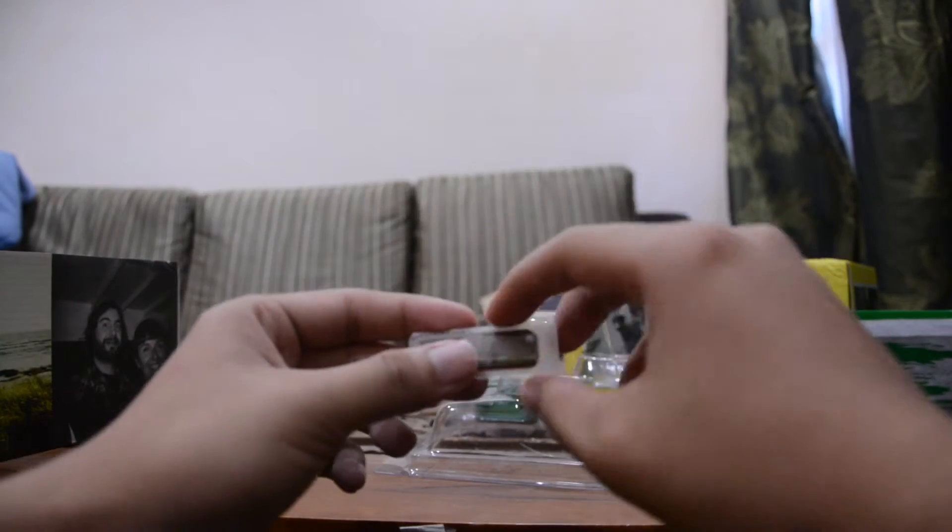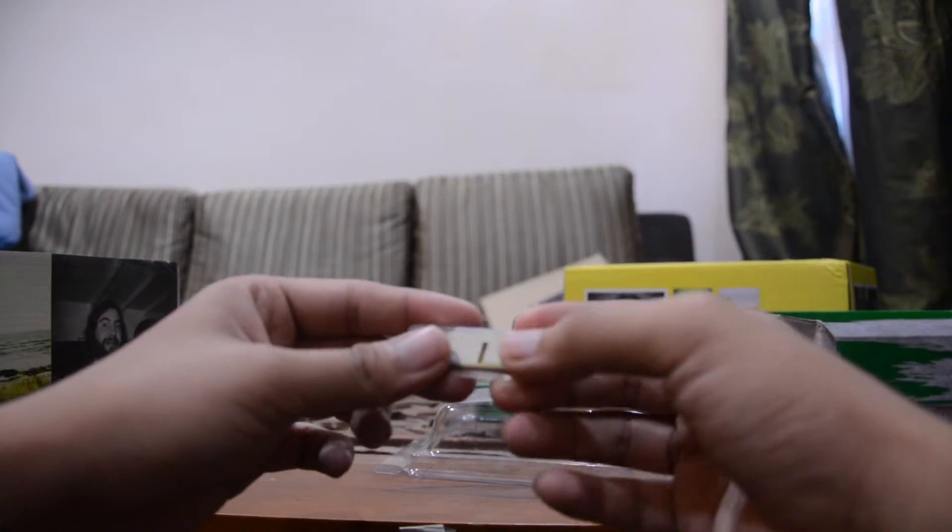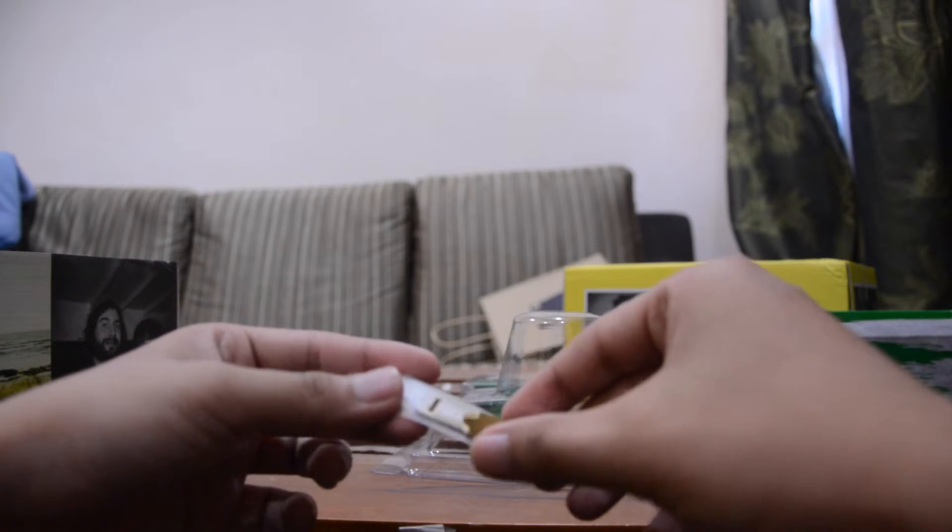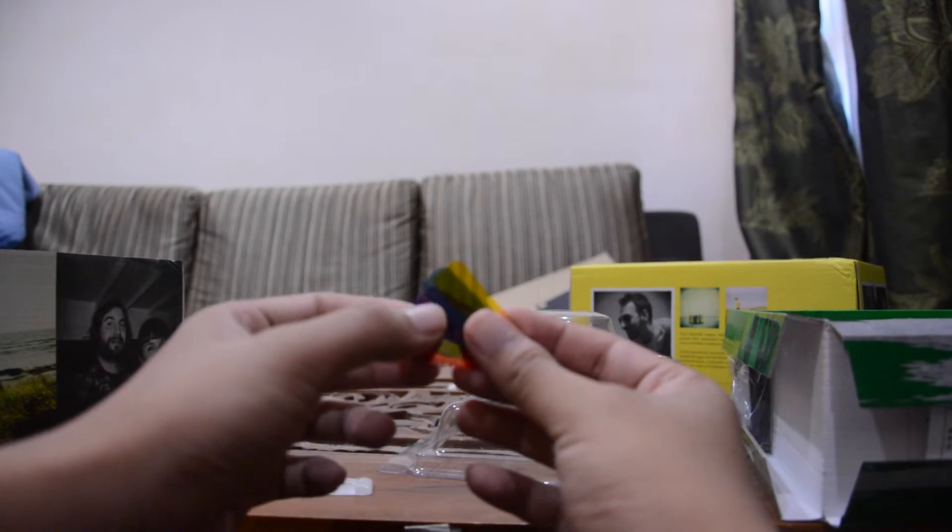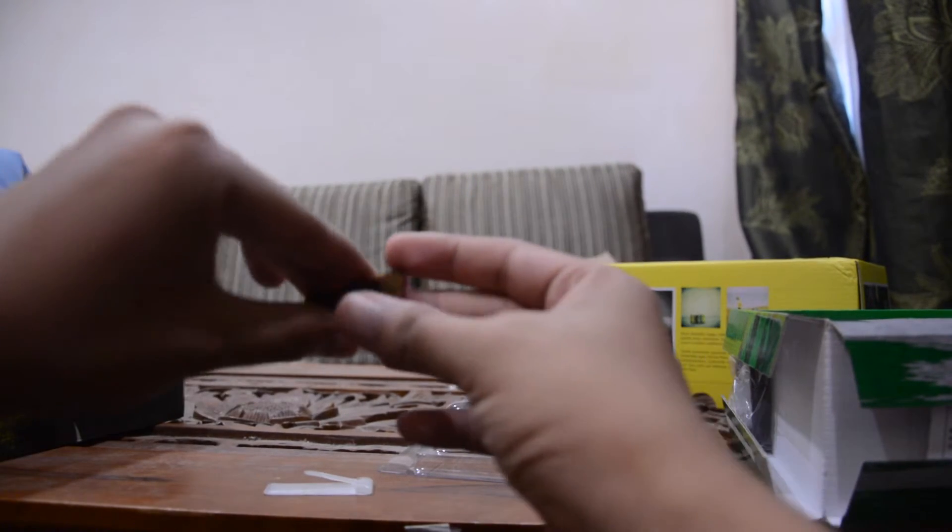There's the focus rings. And yes, this is the colored gel. You can use it by putting it on the flash. Colorful, isn't it?